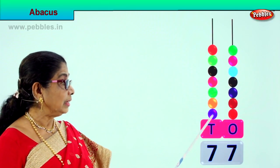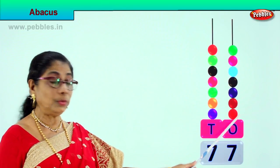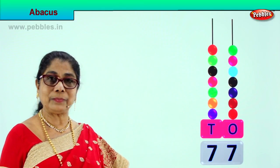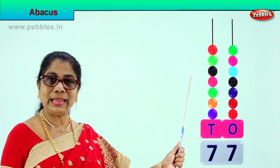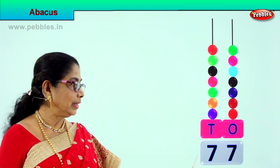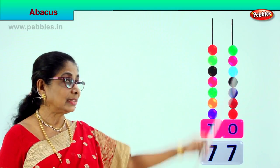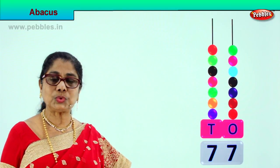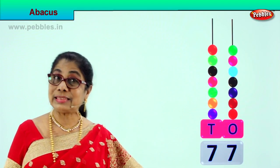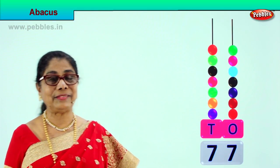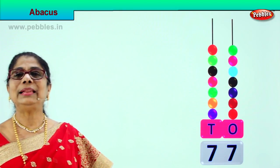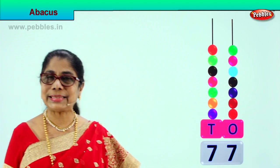Seventy and seven ones — seventy-seven. Seven tens, so we write seven here. Seven ones, so we write seven here. Seventy-seven. Seven tens, seven ones. Good, let's go to the next sum.